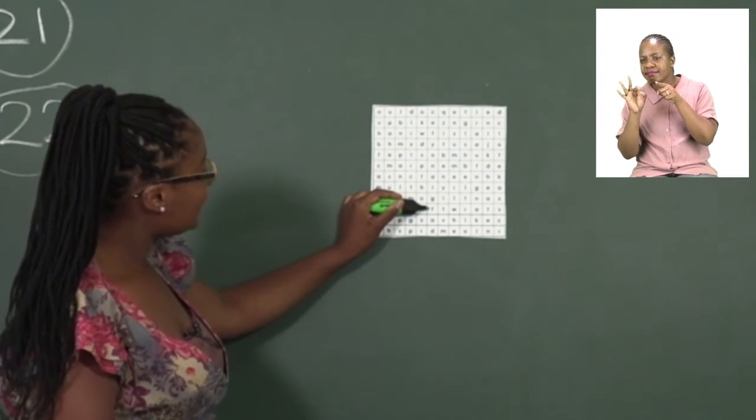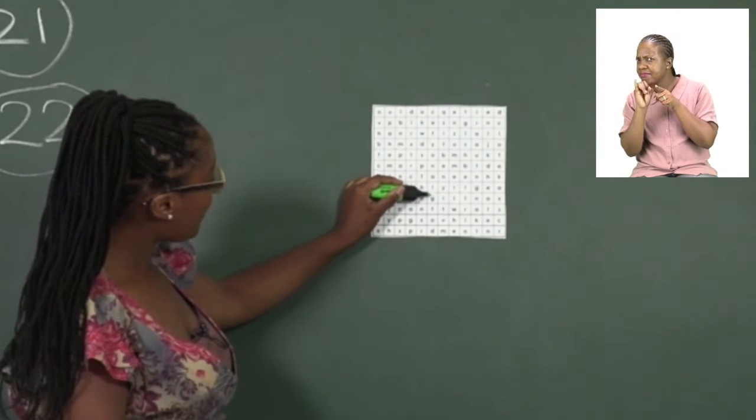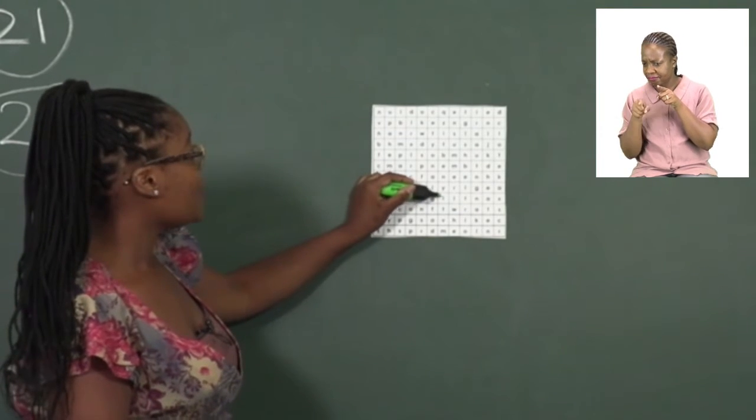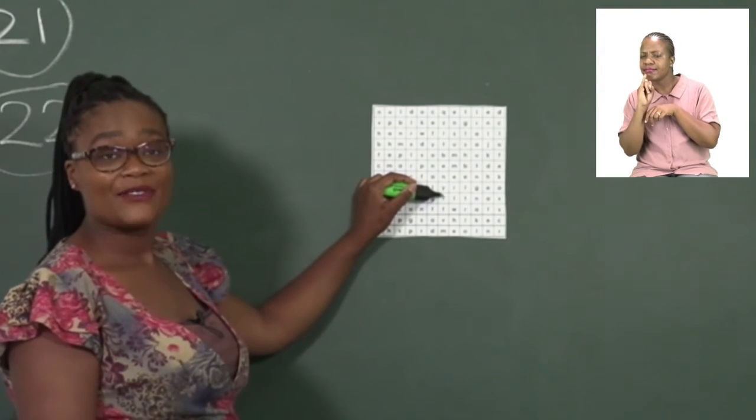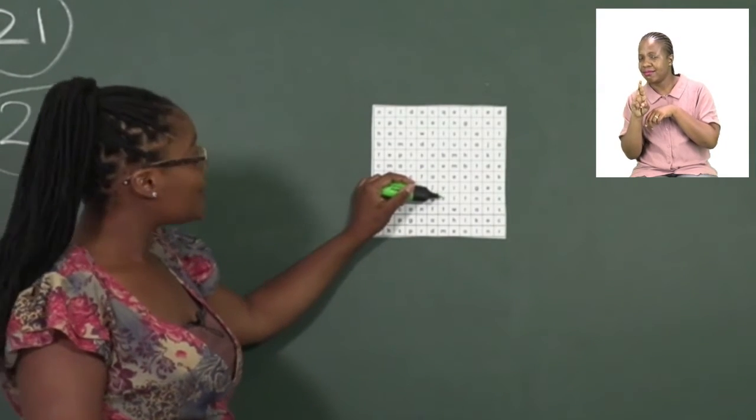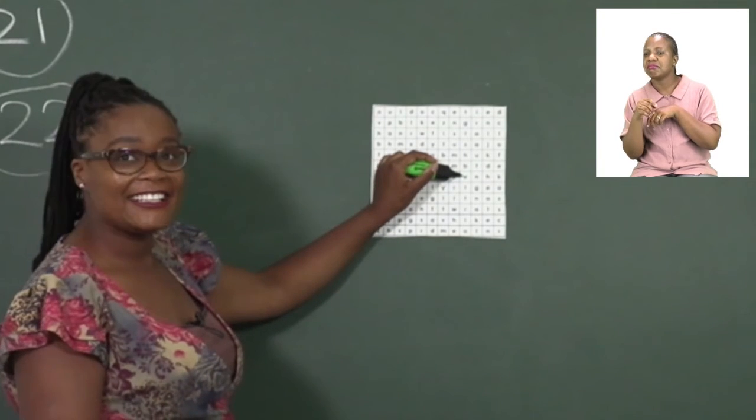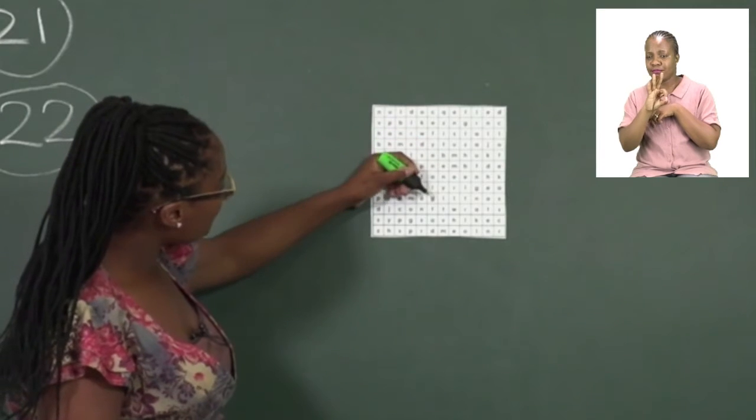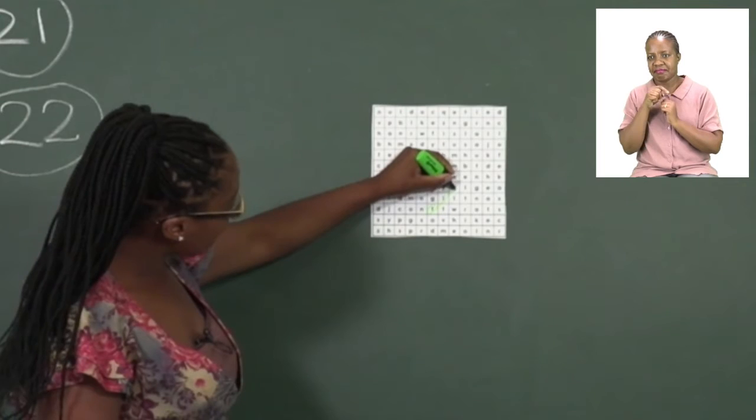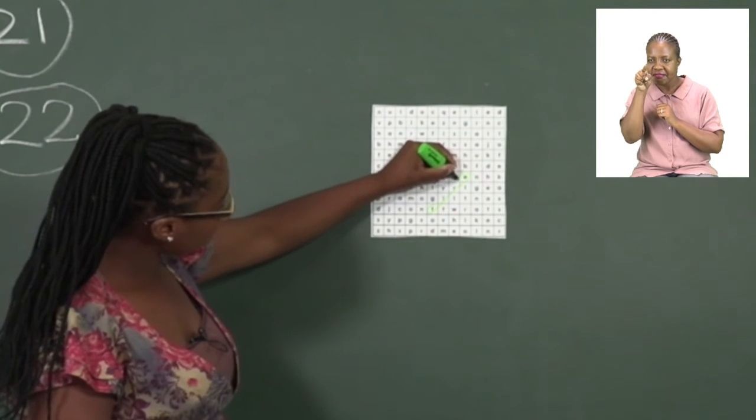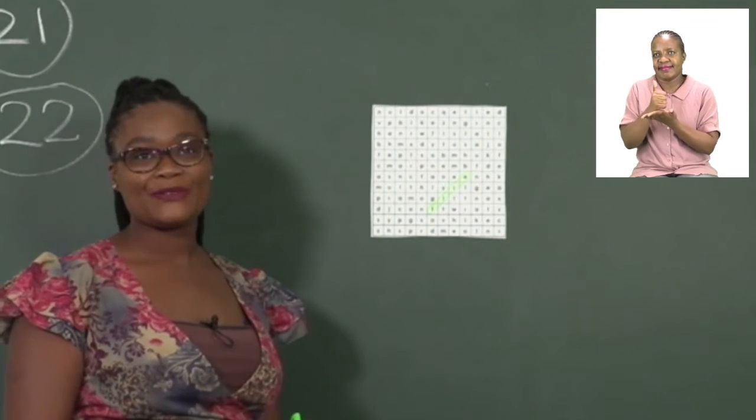I found an F. So I'm going to see if there are any I's around it. That's not an I. That is not an I. But this is an I. So I have F I. What comes next? We have an R. So if I see an R and I see an E. So that means we have found our word fire and this one is actually going up. So we circle it neatly and that is our word fire.